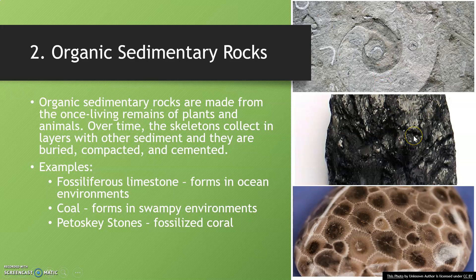Coal is also an organic sedimentary rock. Even though you can't see fossils in coal, it's made out of the remains of once-living plants and animals that were compacted in a swampy environment, then began to decompose — the heat of decomposition and the weight of overlying layers turned it into coal over millions of years. At the bottom you see Petoskey stone, which is fossilized coral. This example is polished, but it's coral that was living in an ocean environment millions of years ago and has since turned into a rock.